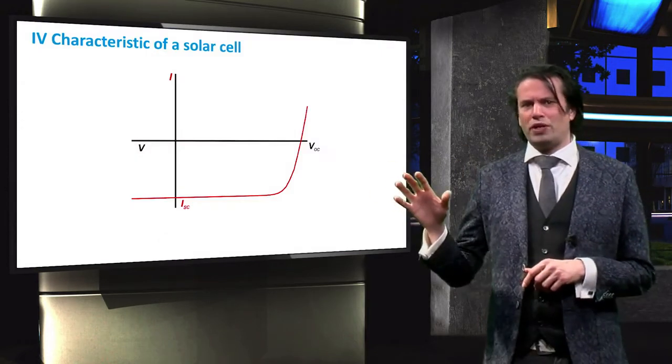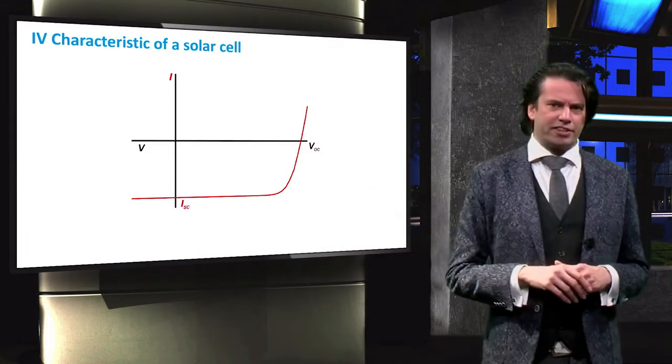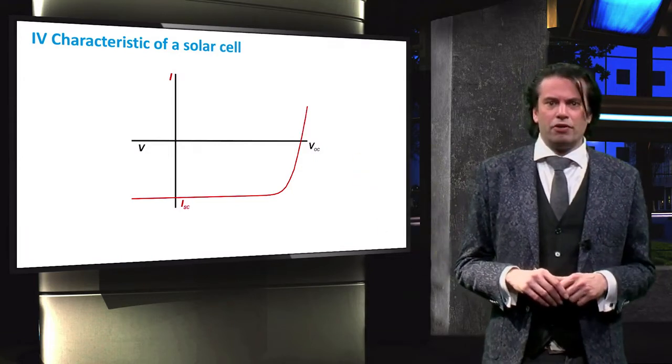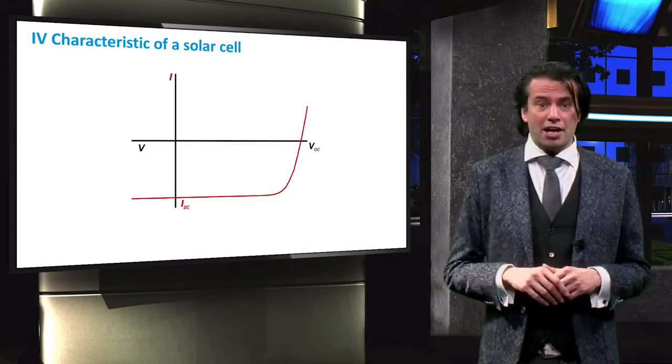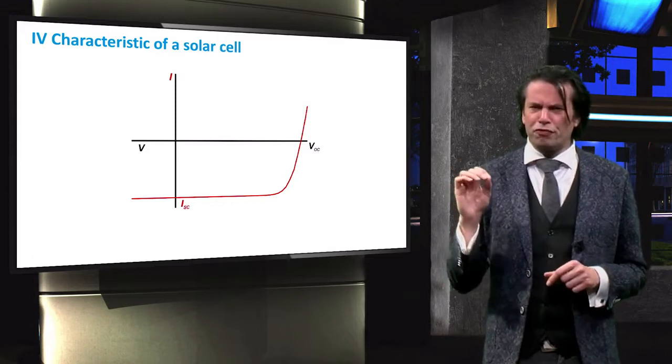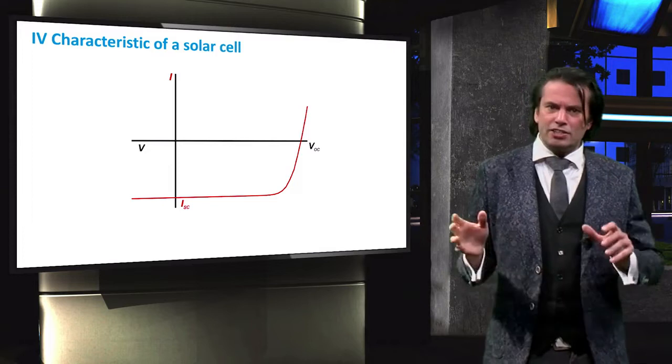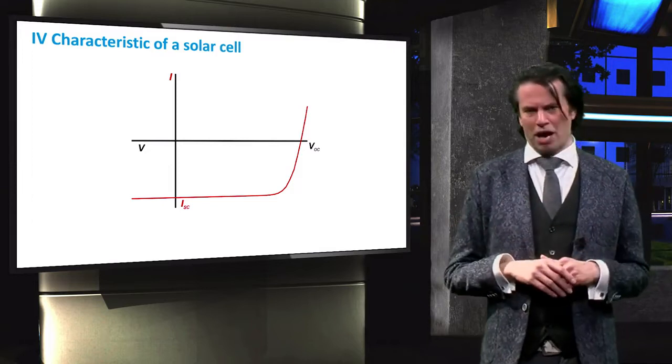Let's start with what we learned in the previous video. Here is the IV characteristic of a solar cell. We can note the VOC and the ISC that we described before. We can notice a few things about this plot. There is an exponential characteristic and it is offset negatively somehow.